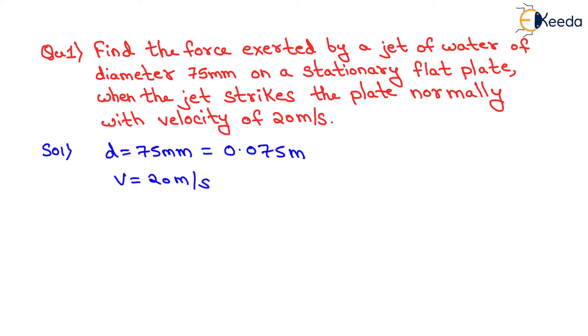Now we will calculate the area of cross-section, which is A = π/4 × d². We know the value of diameter is 0.075 meters, so we will substitute that: 0.075 meters whole square.